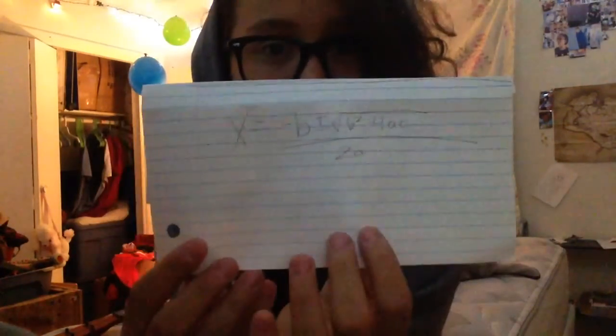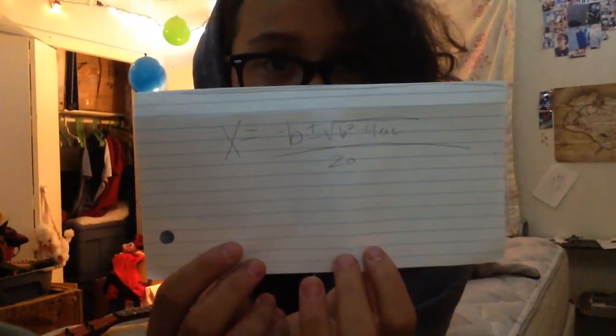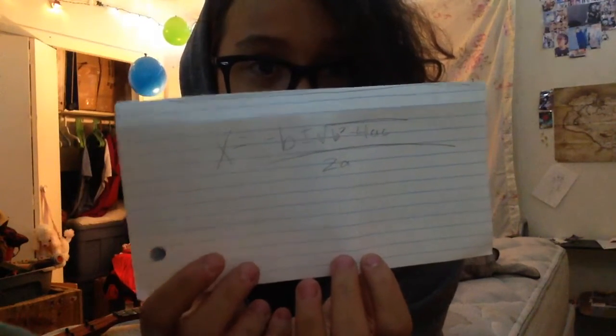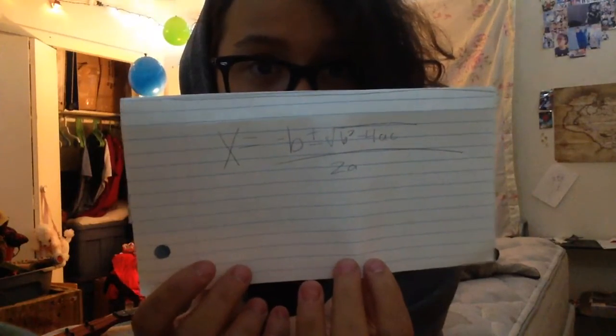So this is going to be a special video. It's my project for algebra. We have to think of a way to creatively memorize the quadratic formula. I worded that really weirdly, I'm sorry. But yeah, and just to start off, this is the quadratic formula: X equals negative B plus or minus the square root of B squared minus 4AC over 2A.